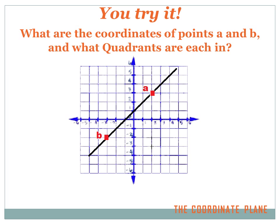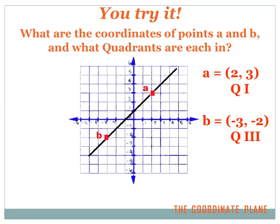Try this one. Here we've got a line on a coordinate plane and two points on that line, a and b. What are the coordinates of those points? Let's do a first. The x-value: we go positive 2. And then the y-value is also positive — we're going up 3. So the a-coordinates are 2, 3, and it's in quadrant one. What's b? On the x-axis we go 3 to the negative side, so it's negative 3. And then the y-value is 2 down, so it's negative 2. So b is at minus 3, minus 2, and it's in quadrant three.